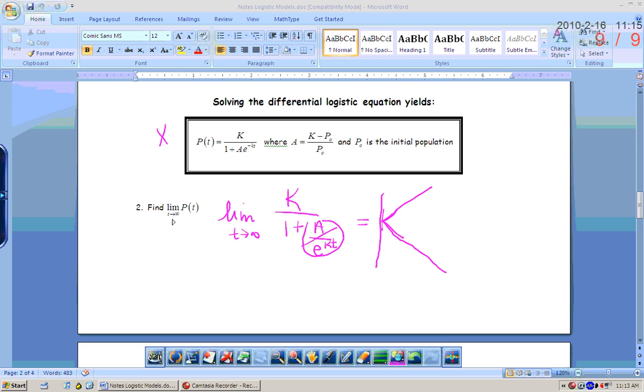Let's think about what that means. As time goes to infinity, your population is approaching big K. Well, what does big K represent? The carrying capacity.